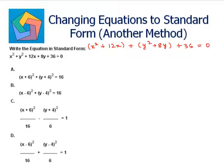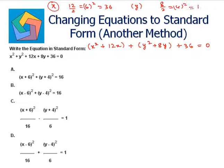Similarly, take the coefficient of the y term divided by 2 and square it. So 12 divided by 2 is 6, and 6 squared is 36. For y, it's 8 divided by 2, that's 4, and 4 squared is 16. So we will add and subtract these terms.